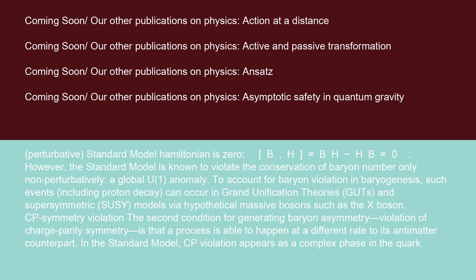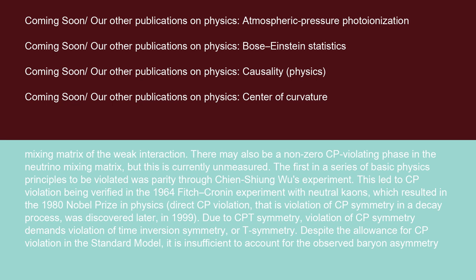CP-symmetry violation is the second condition for generating baryon asymmetry. Violation of charge parity symmetry means that a process is able to happen at a different rate to its antimatter counterpart. In the standard model, CP violation appears as a complex phase in the quark mixing matrix of the weak interaction. There may also be a non-zero CP-violating phase in the neutrino mixing matrix, but this is currently unmeasured.